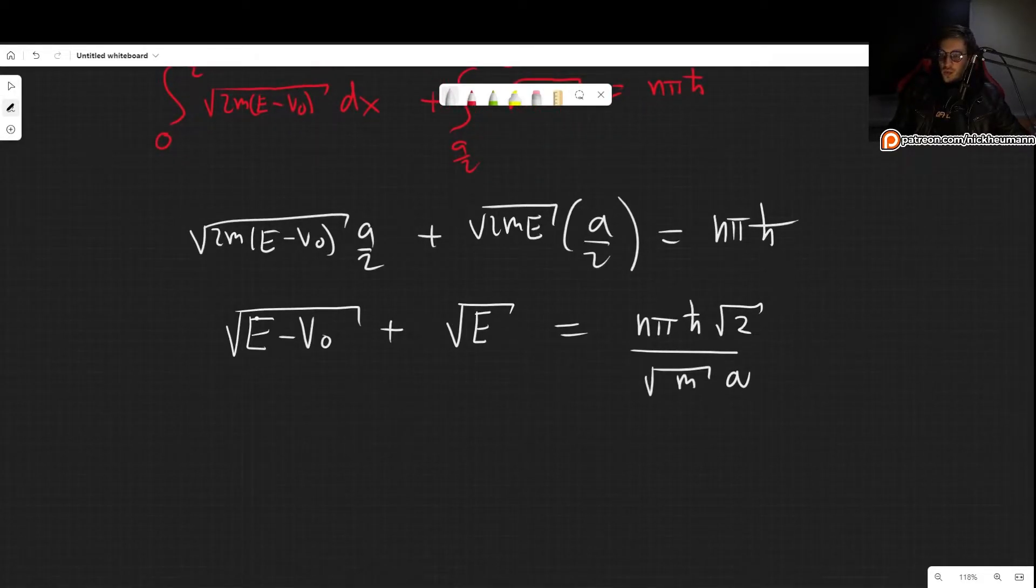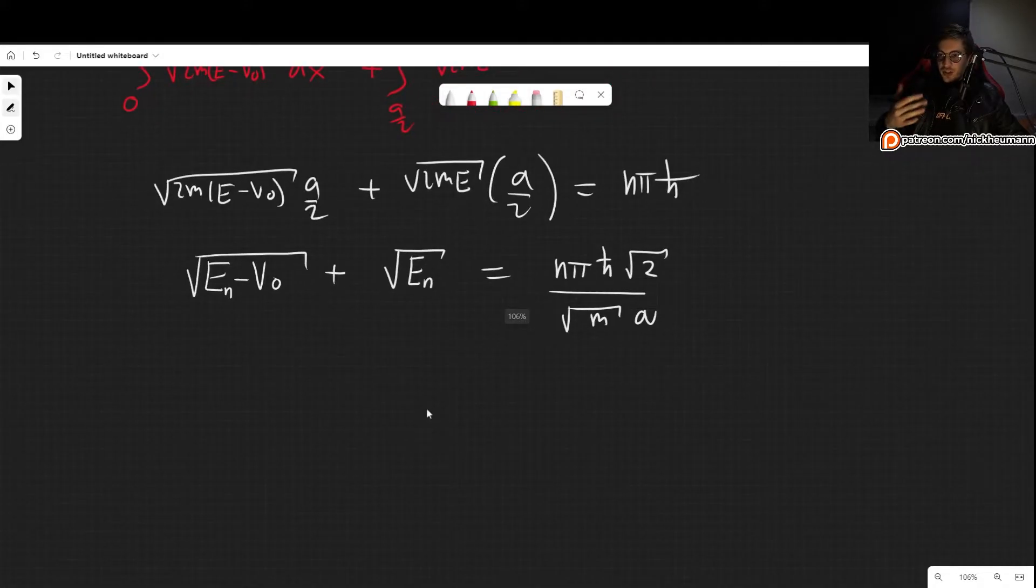Now what we want to do is solve for the energy—that is our objective. If you want, we can clarify and write this as EN, just so that you are very sure that these are the energy levels of our problem. So to find the energy, we are going to have to square this entire thing. Doing that here, we get EN minus V0 plus 2 times square root of (E minus V0) times square root of EN, and then plus EN.